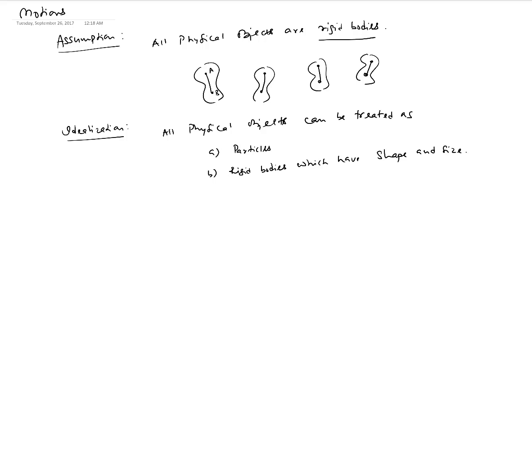Now the first question is when can we make these idealizations? When do we treat physical objects as particles? When do we treat physical objects as rigid bodies? It depends on the problem and what kind of properties you're trying to study.